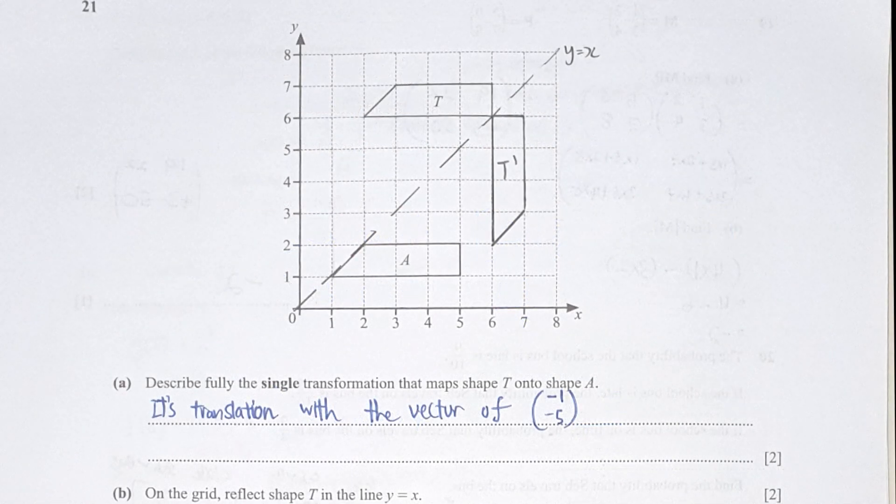Question 21. Describe fully the single transformation that maps t onto a. So this is actually a translation with the vector of negative 1, negative 5. The negative 1 indicates that it shifts towards the left by 1 step. And negative 5 there that indicates that it shifts downwards by 5 steps. Question b on the grid reflect shape t and the line y as opposed to x. So I label a t image over there to indicate this.